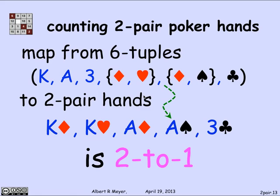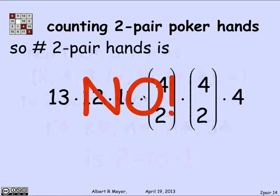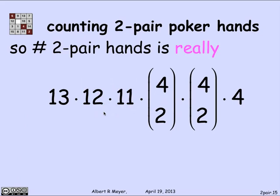There's just a couple of pairs. Now that I realize the mapping from these six-tuples — which I've counted correctly — to the two pair hands is two-to-one, by the division rule, all I need to do is divide that number by 2, and that is the correct answer for the number of two pair hands.